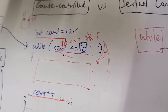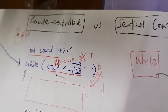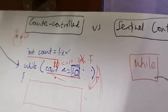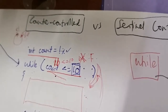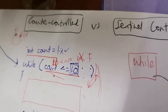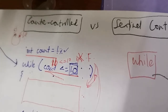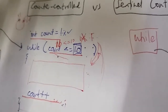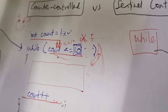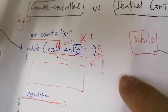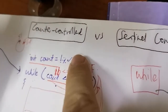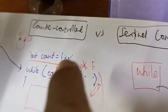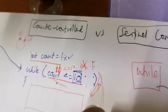Here is the difference between counter control and sentinel control. For counter control, the loop repeats for a number of times and you can control that number — for example, six times, two times, up to 100 times. You can count the number of repetitions, so we call it a counter control loop. We have two types: counter control and sentinel control.